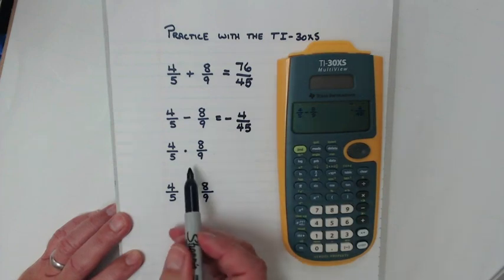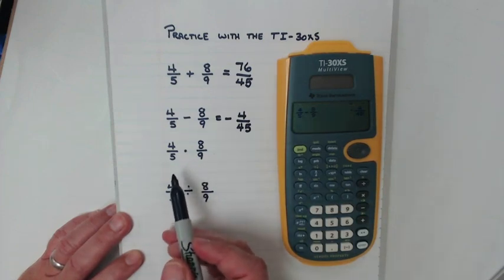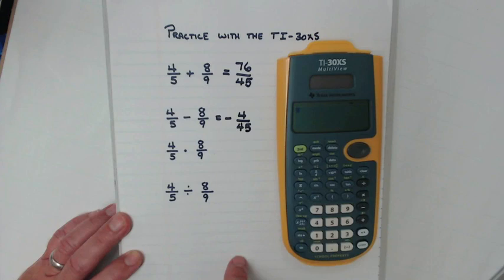Let's try this multiplying problem. Clear it out. Fraction button. Four, move it down. Fifth, move it over for your operation.